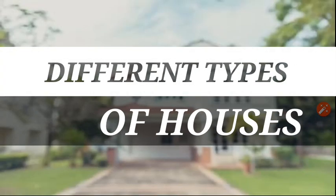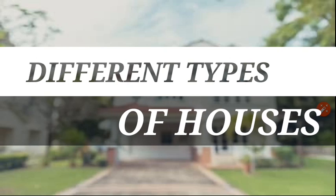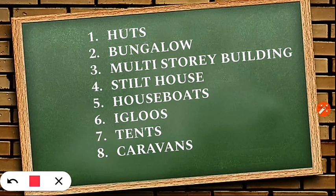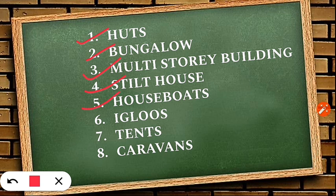Now, students, let us know about the different types of houses that we find around us. In this chapter we will be studying about huts, bungalows, multi-story buildings, stilt houses, houseboats, igloos, tents, and caravans. We will be studying each type of house in detail.